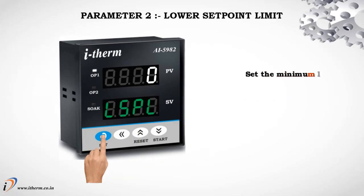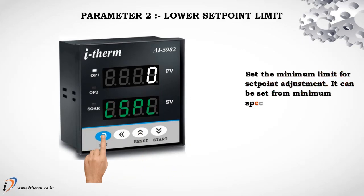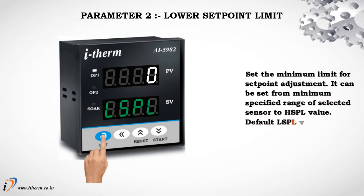Parameter 2: Lower Set Point Limit (LSPL). Set the minimum limit for set point adjustment. It can be set from the minimum specified range of the selected sensor to the HSPL value. Default LSPL value is 0.